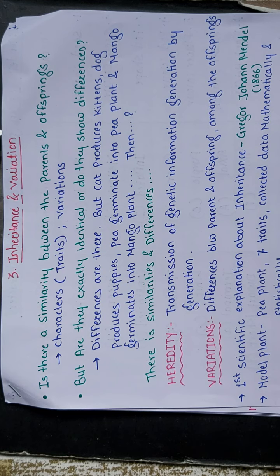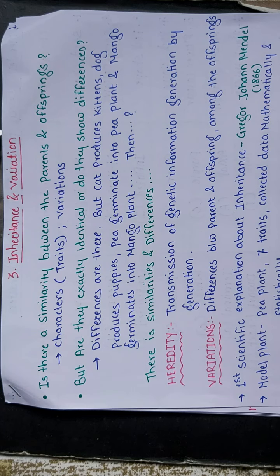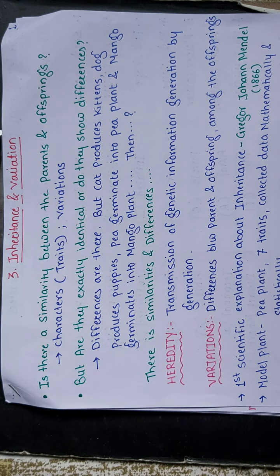That is why people tell us we are looking like our father or mother. But we are not actually identical — some characters are like our parents, and the rest is variation. This heredity and variation come under the branch of biology known as genetics.